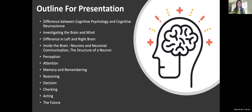The outline of the presentation begins with the difference between cognitive psychology and cognitive neuroscience, then covers what the brain and mind are and how we deal with them, followed by some of the key concepts in cognitive neuroscience.